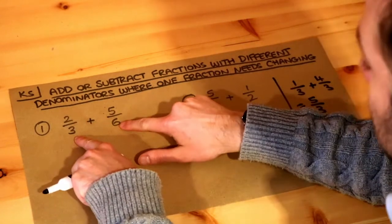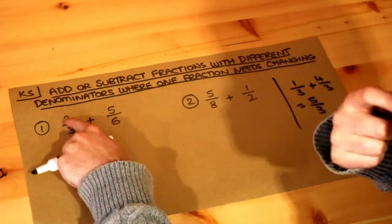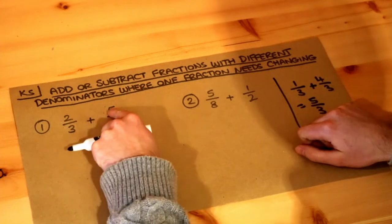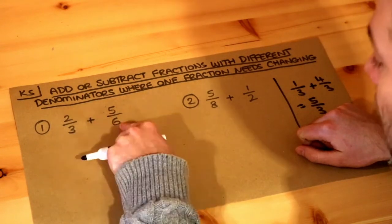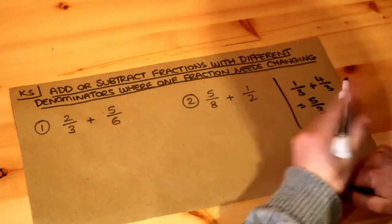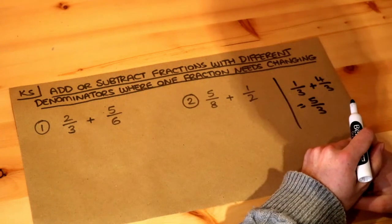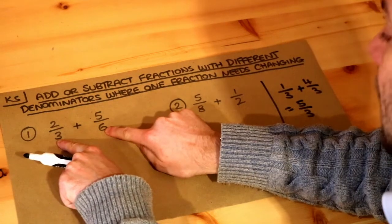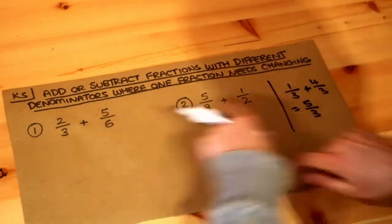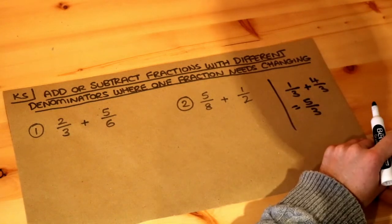But if the denominators are different, it's not quite so easy because we've got two thirds of something and we're adding five sixths of something—we've got different fractions of something. Thirds and sixths, so we can't add those in the same way. So what we want to do is we want to make these bottom numbers, the denominators, the same because then we can use the same trick.